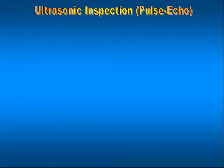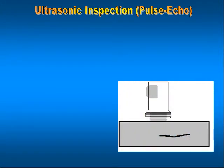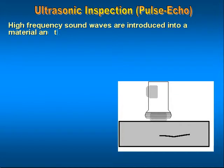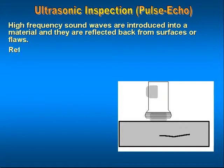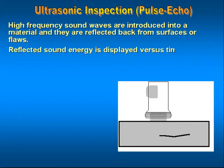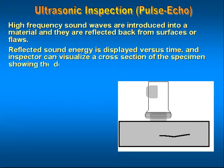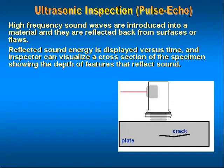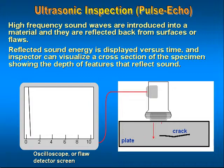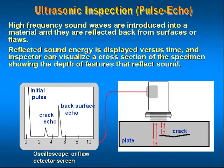Ultrasonic inspection — pulse echo technique. As high frequency sound waves are introduced into a material, the sound waves are reflected back from surfaces or flaws. On the left is an oscilloscope screen. This screen shows reflected energy displayed versus time, enabling an inspector to visualize a cross-section of the specimen showing the depth of the feature that reflected the sound.